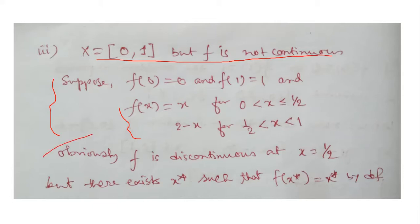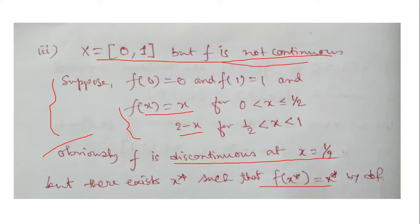Obviously f is discontinuous at x = 1/2. You can see f(1/2) = 1/2, but f(1/2⁺) = 1/2 and f(1/2⁻) = 3/2. But there still exists x* such that f(x*) = x*. So a function can be discontinuous but there can still always exist f(x*) = x*.